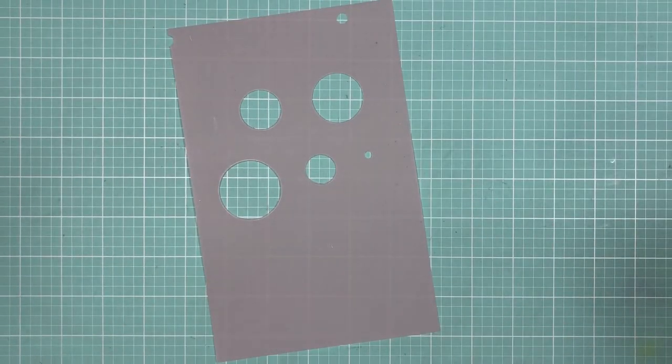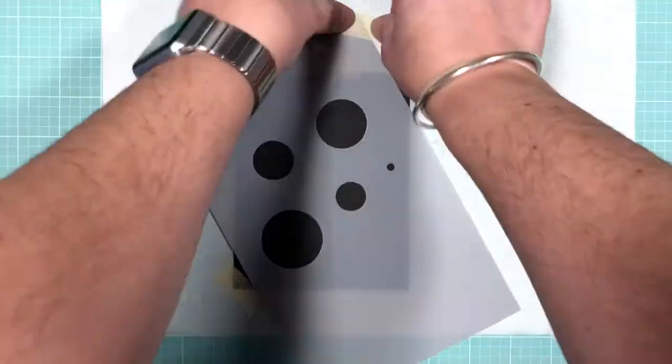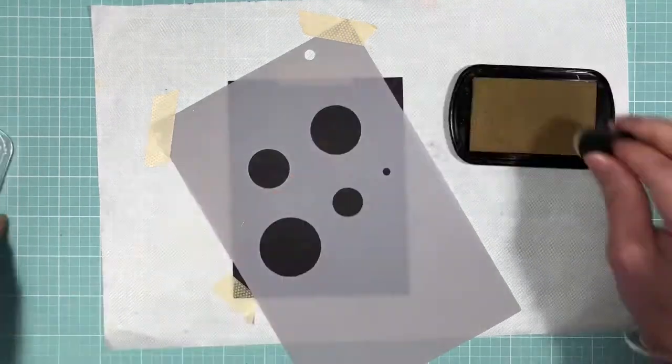So I ended up using my Crop-A-Dile to punch a smaller hole out.